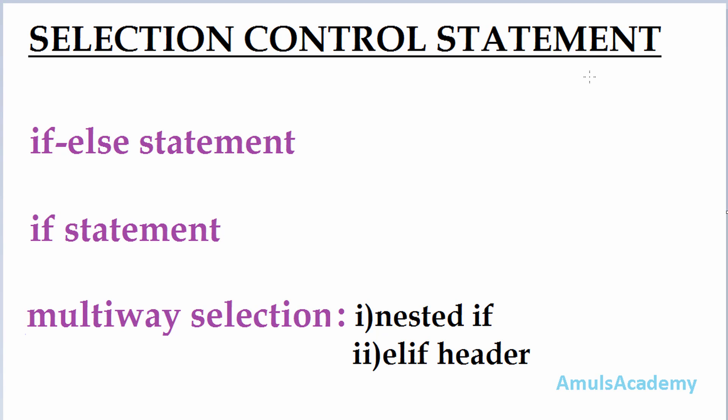In the previous class we discussed about the control structures. First we discussed about the sequential control, that is the instructions are executed based on the order in which they are written. The second one is selection control, that is based on some condition there will be selection of statements. Today we are discussing about the different types of selection control statements.